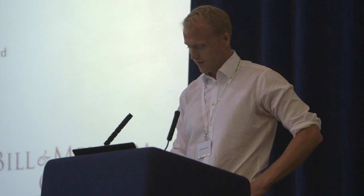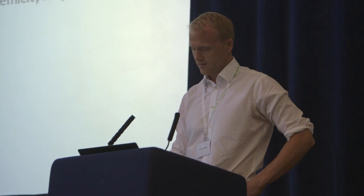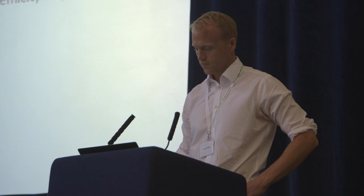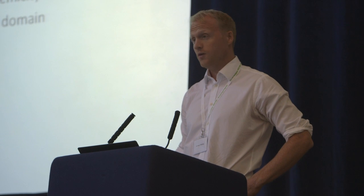Since its inception in 2005, the Malaria Atlas Project has primarily been known for the generation of global risk maps for both PF and more recently PV. These are cross-sectional maps of risk tied to a specific target year, and the most recent iteration is for 2010. Back in 2012 we embarked on a new project.